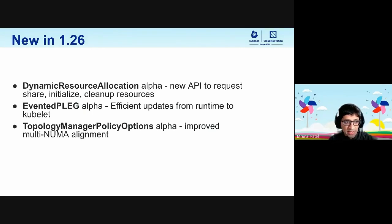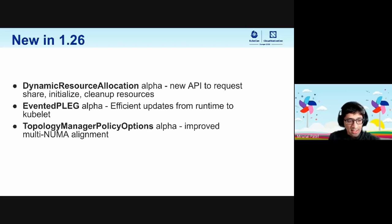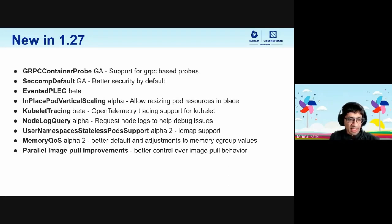These are three new features we want to highlight in 1.26. First is Dynamic Resource Allocation (DRA) — a whole new API to request, share, initialize, and clean up resources. It's like a generalized version of how storage is accessed today, and opens up possibilities like splitting a GPU into multiple slices and using them across pods. The next is Evented PLEG alpha — typically Kubelet relists pods and containers from the container runtime every few seconds, putting a lot of load on both components. Evented PLEG is an effort to make updates evented rather than relying on frequent relisting. We also added improved multi-NUMA alignment options to the topology manager in 1.26.